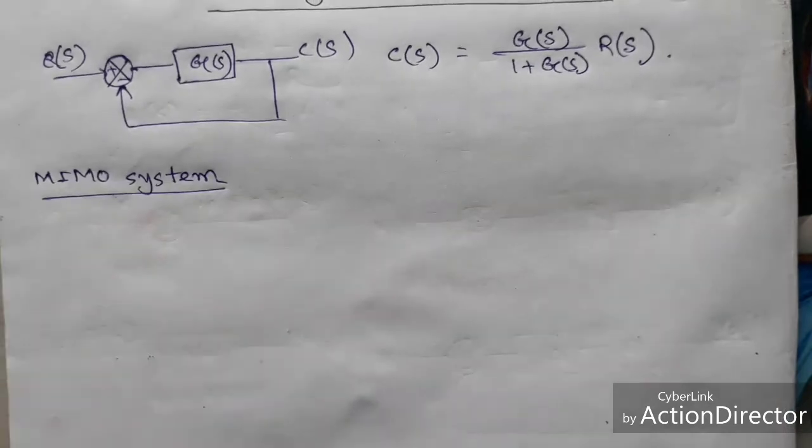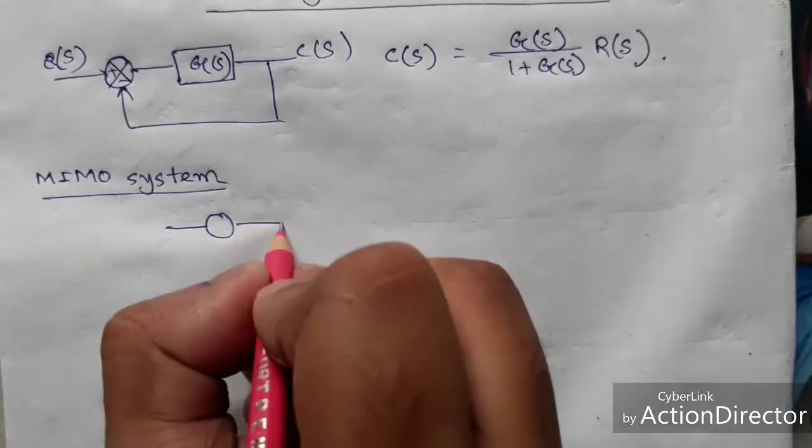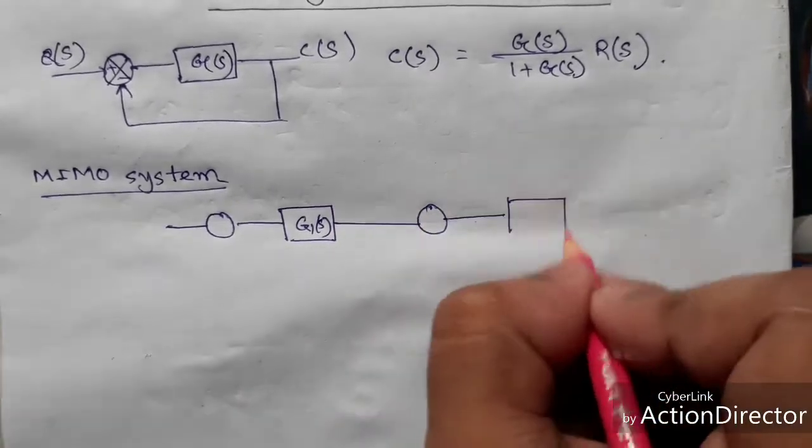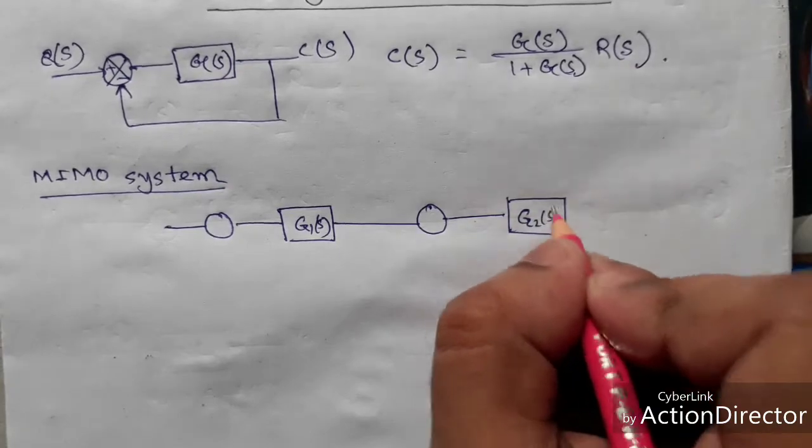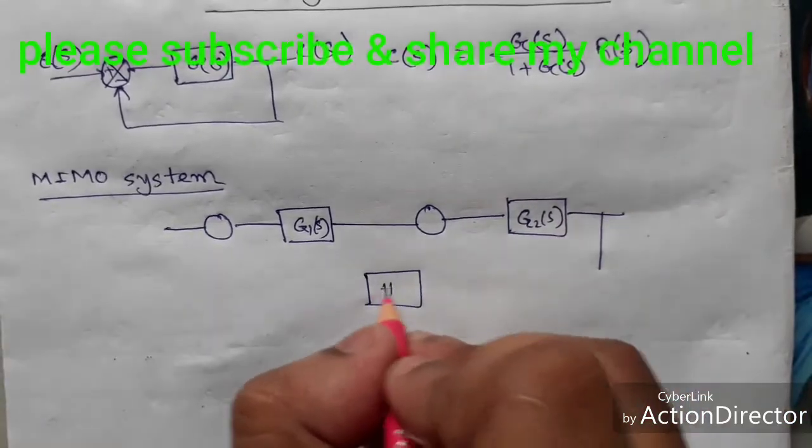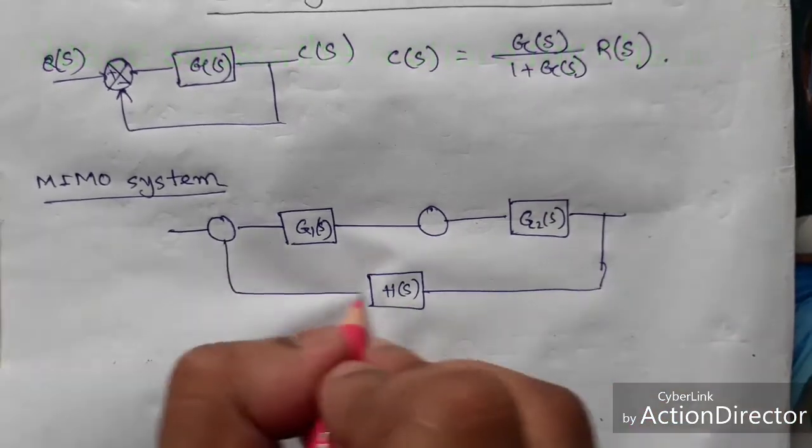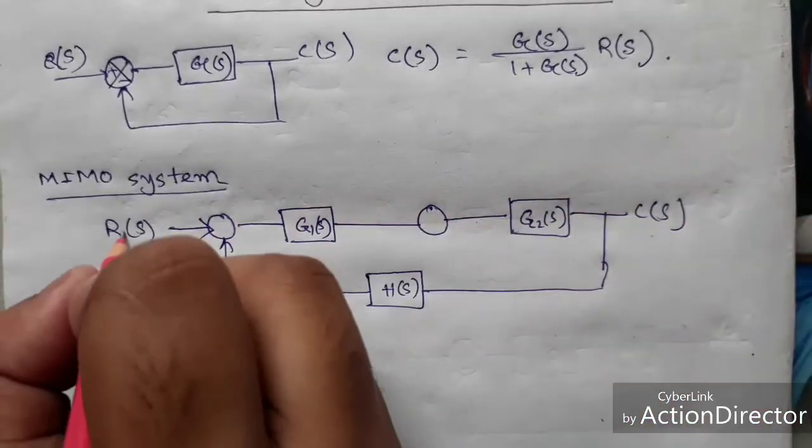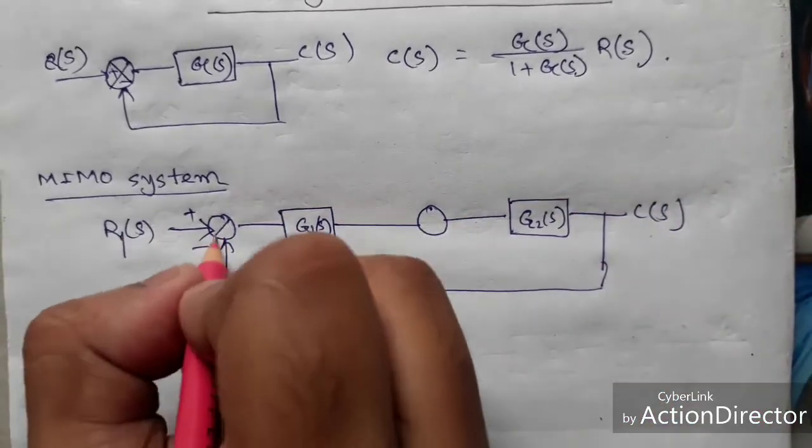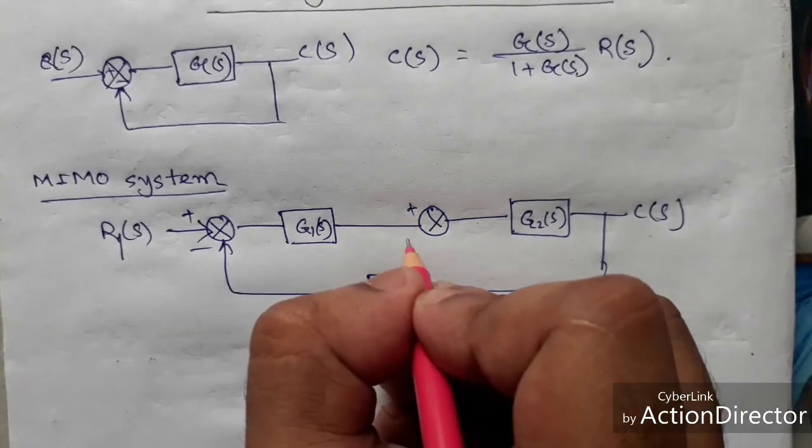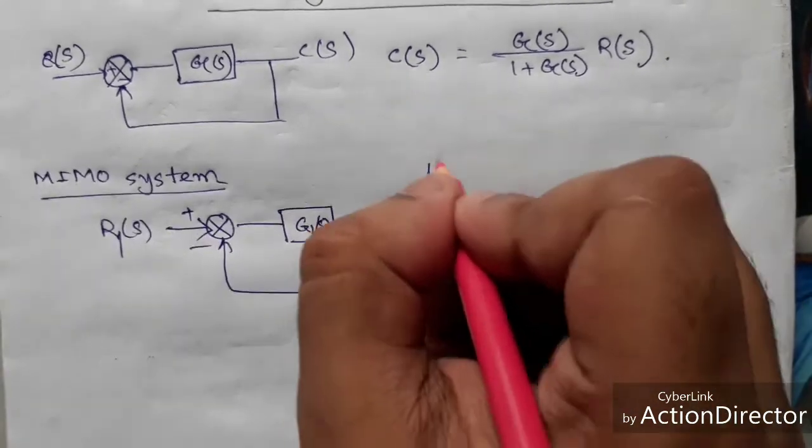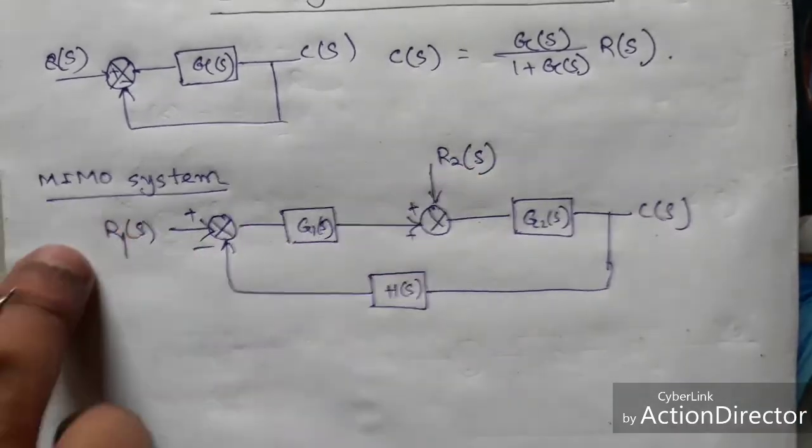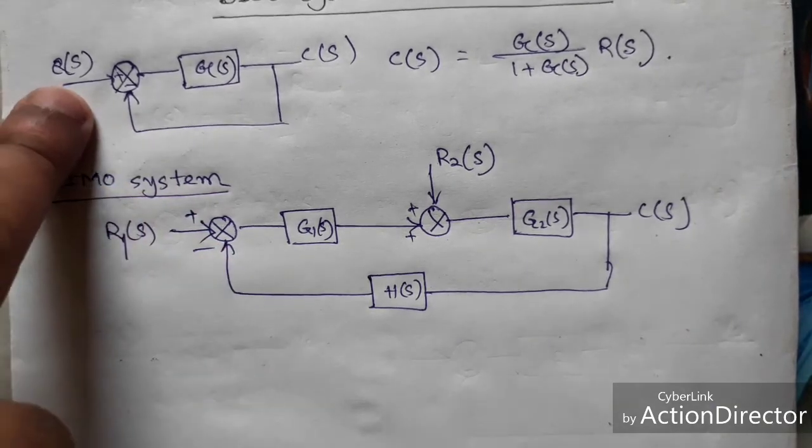So let us consider one block diagram. Consider G1(S), G2(S), if we feedback H(S), this is R(S) input, this is C(S), plus minus plus plus. If we here we consider R2(S), this is one input, this is another input, that's why this is MIMO system. In case there is only one input, this is SISO system.